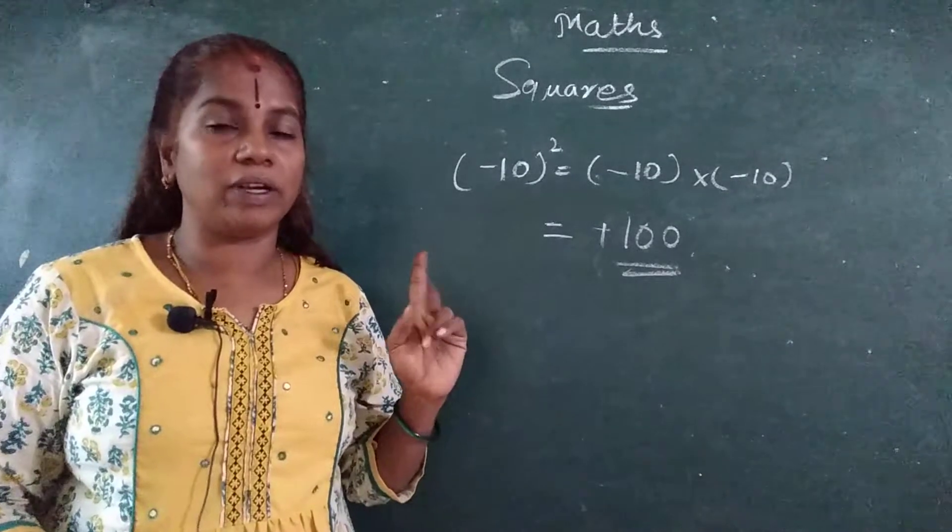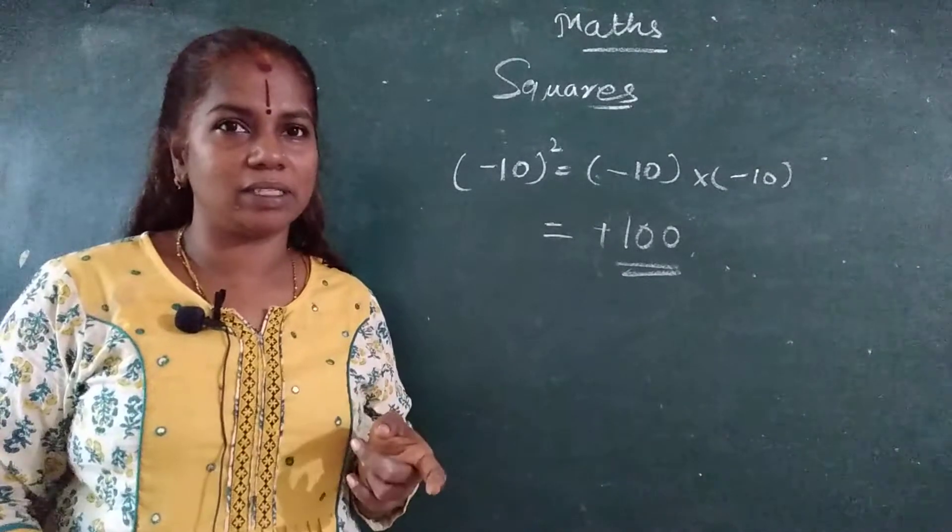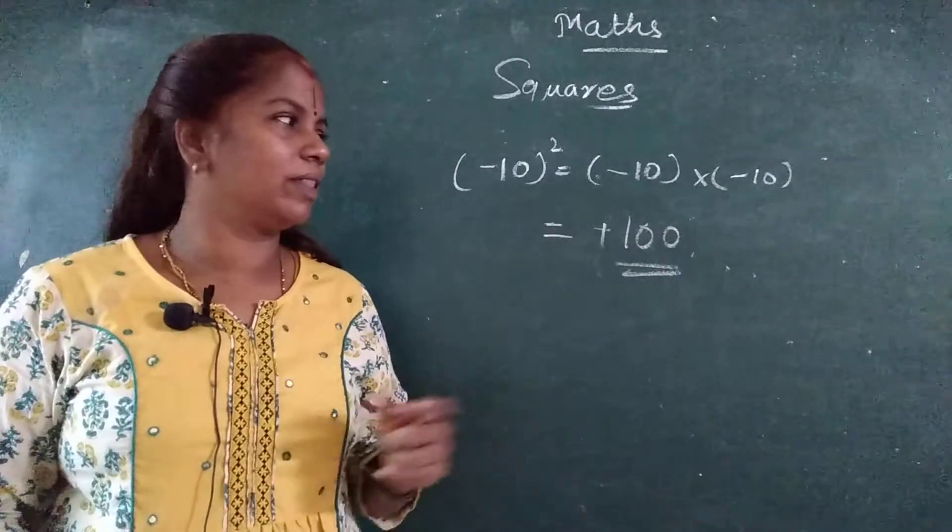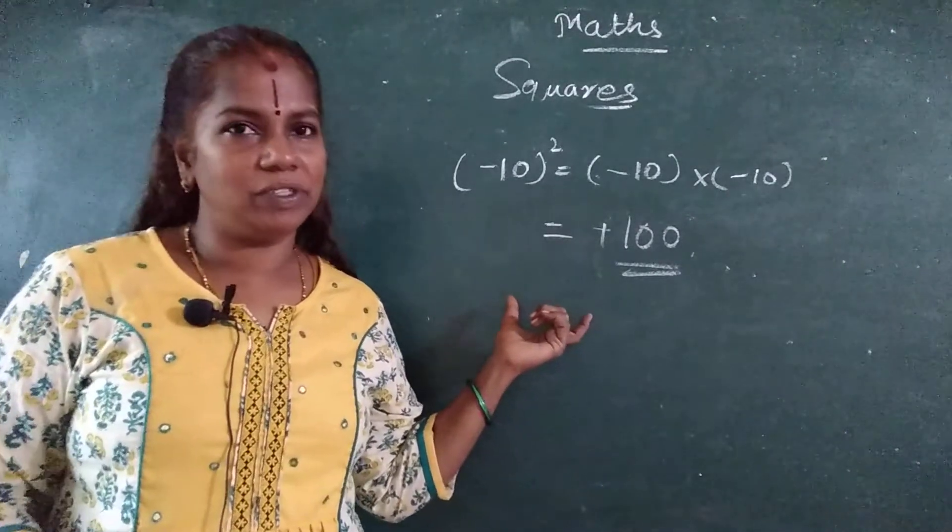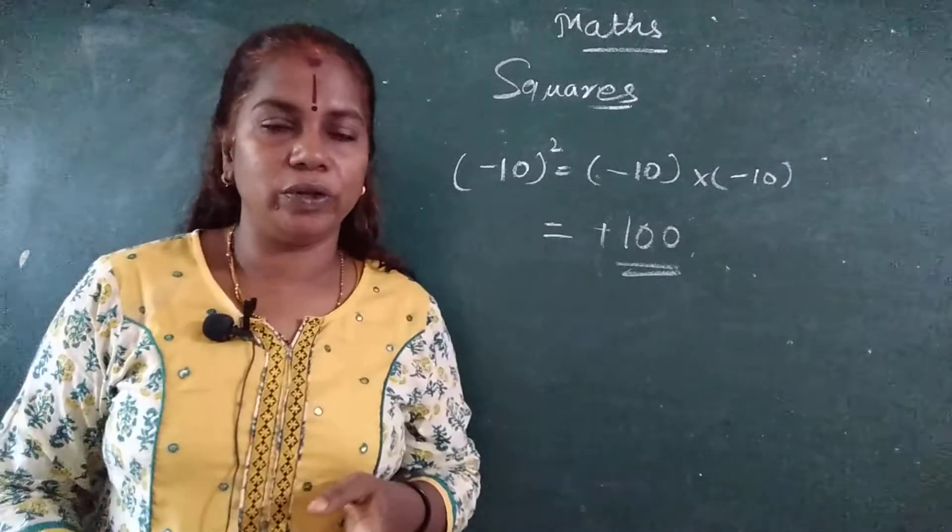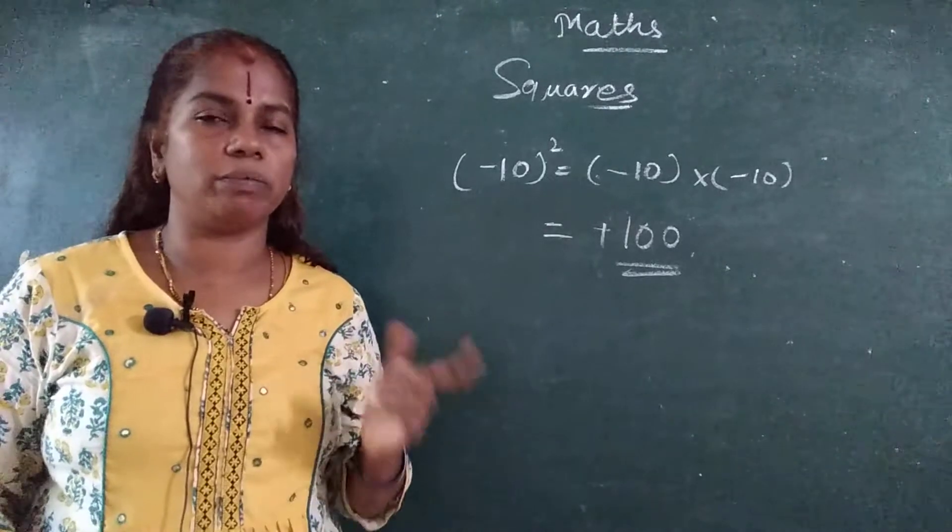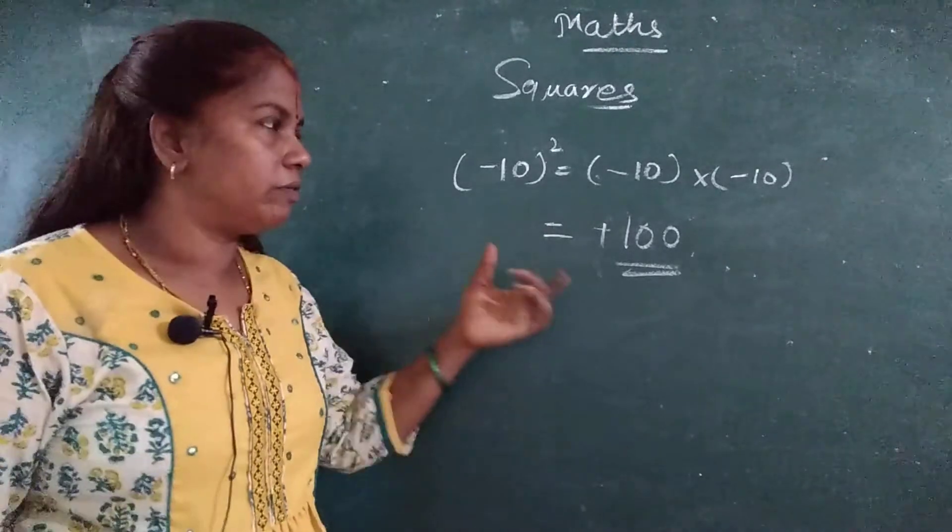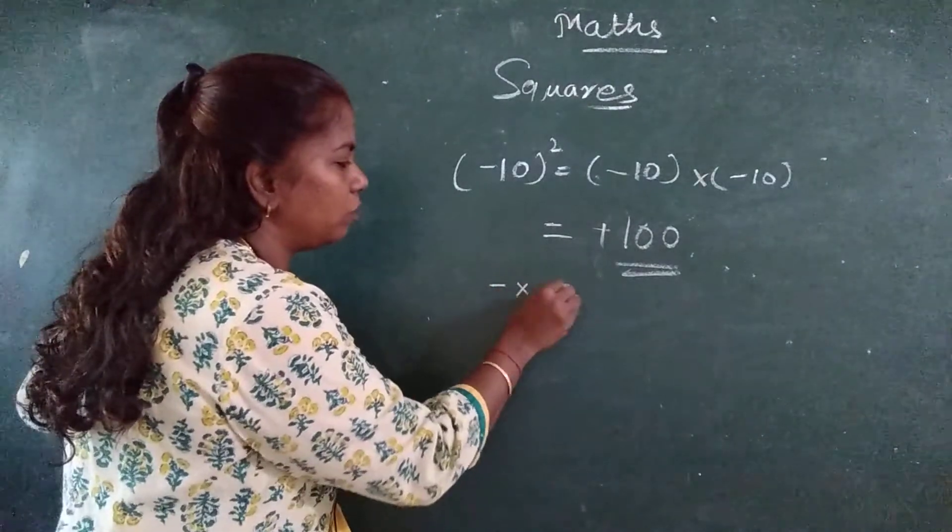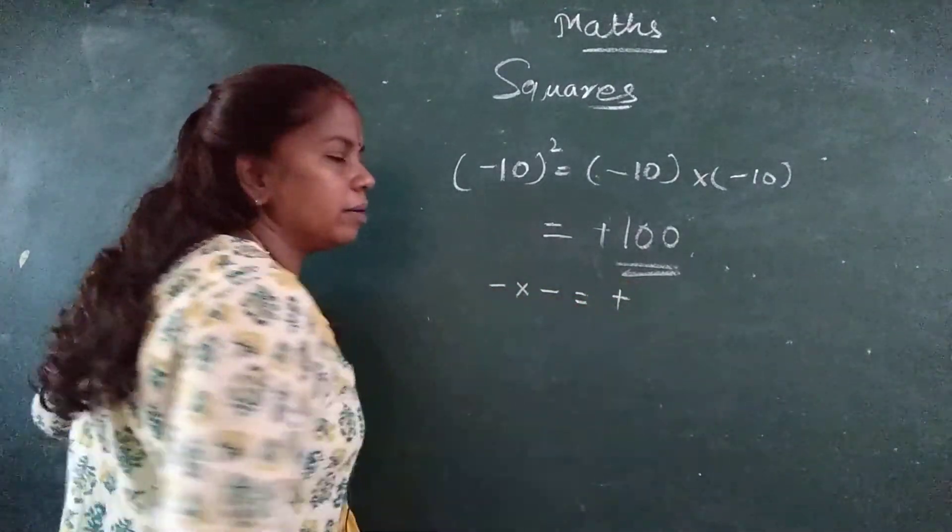Got it? Now how this minus into minus become plus? I have taught you that rule, isn't it? When two different signs come, put the greater number sign. I have taught you in addition and subtraction. In multiplication and division, I will teach you. I will put one more video on that. What are the signs to be followed when you are multiplying or dividing?